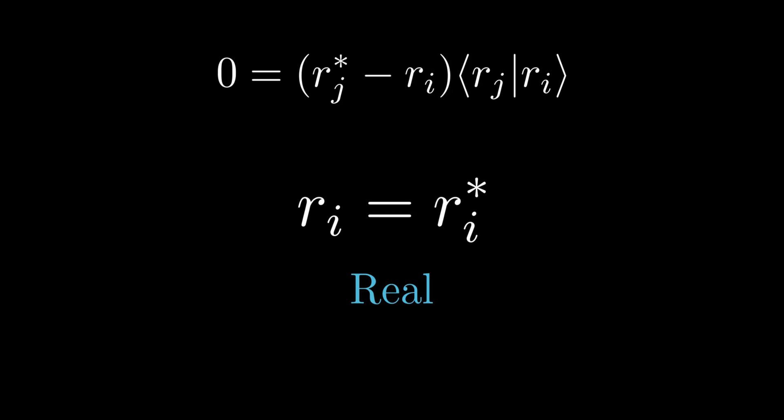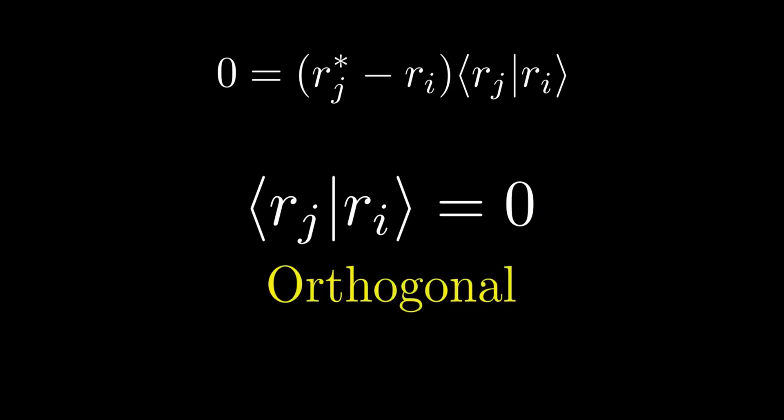Consider, if i does not equal to j, then the difference does not vanish. And we can conclude, the inner product of rj and ri is zero. Only orthogonal states have zero inner product, provided that none of the kets vanish. This completes the proof of the second property of the observable.